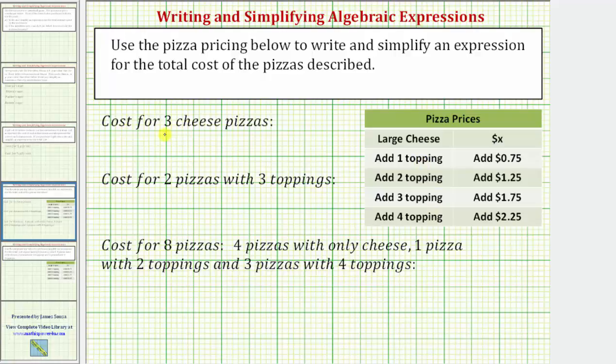We first want the expression for the cost of three cheese pizzas. And because each cheese pizza costs x dollars, three times x, or 3x, is the expression for the cost of three cheese pizzas. When writing expressions, we normally leave the units off. In this case, we know the units are dollars.